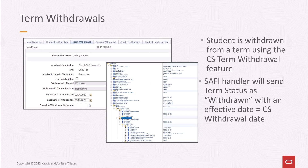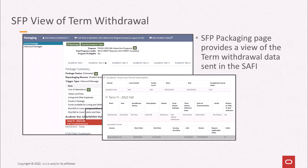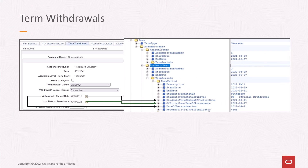If a student is completely withdrawn from a term using the CS term withdrawal feature, the SAFI handler will send the term status of withdrawn using the CS withdrawal date as the effective date, as seen in the sample SAFI XML. The term withdrawal does not withdraw the SFP program, however. When SFP receives a SAFI with this information, the program record remains active. The term status can be viewed using the SFP package screen to drill into the term detail. The CS term withdrawal date is used for the SFP term status effective date and the date of determination.